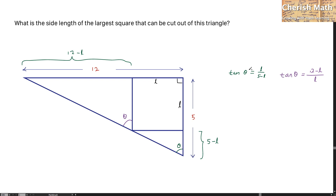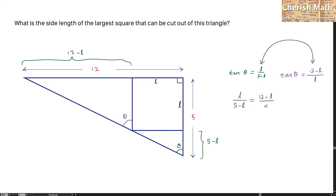The equation on the left and right are the same, so I can equate them directly: L divided by (5 minus L) is equal to (12 minus L) divided by L.